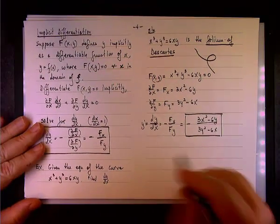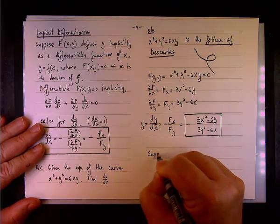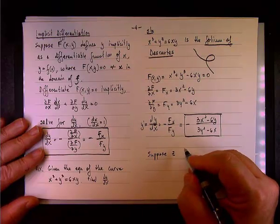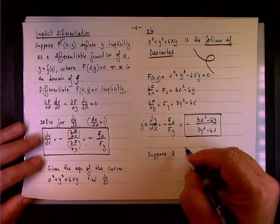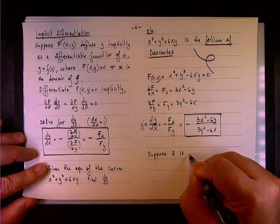So, here's another supposition: suppose Z is expressed implicitly by F(x,y,z).